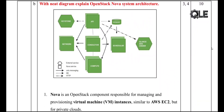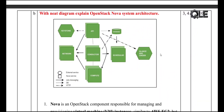Let's break down Nova's architecture into its key components. API: the main entry point — it handles all incoming HTTP requests from users or services. Scheduler: picks the best compute host to run a new virtual machine. Compute: interacts directly with hypervisors to launch and manage VMs. Conductor: handles complex coordination tasks and acts as a secure proxy to the database. Database: stores data about VMs, users, hosts, and system state.